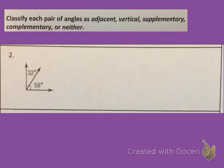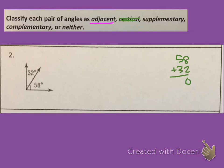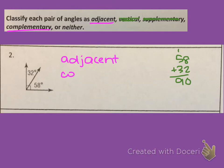Let's look at this pair of angles. Adjacent angles are right next to each other sharing a common side, and I do see that these angles are right up next to each other sharing a common side, so they are adjacent. They can't be vertical because they're not across from each other. The sum of these two angles is not 180 degrees, so they're not supplementary. But they are complementary because the sum adds up to 90 degrees. So these two angles are both adjacent and complementary.